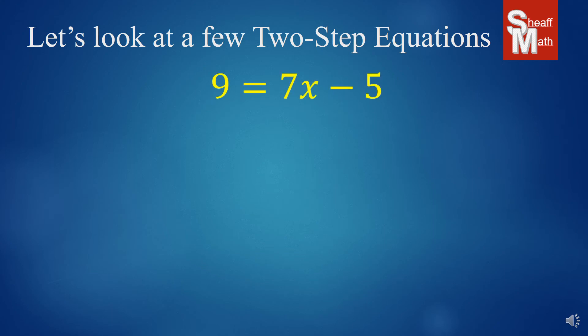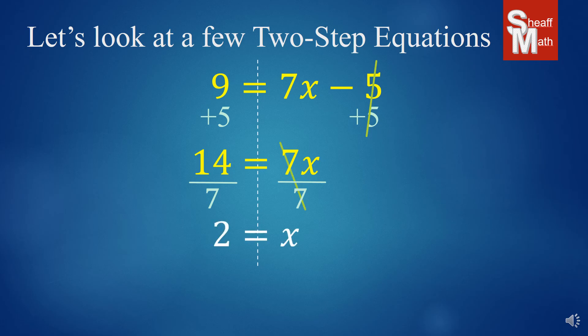Now, sometimes the x is on the right side, and you do the same thing as you did before. It just looks different. So, we're going to take care of that minus 5 first, that constant. We're going to add 5 to both sides, canceling it out. And we are left with 14 equals 7x. That 7 times x needs to be undone, so we're going to divide by 7, canceling it out, and we get 2 equals x. But, when you're giving your final answer, always flip that around and have x equals 2. That's the proper way, because you're solving for x.